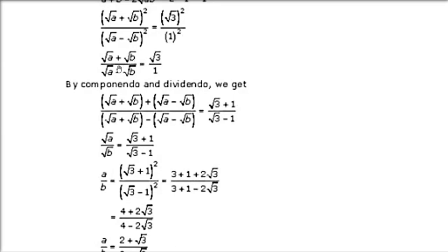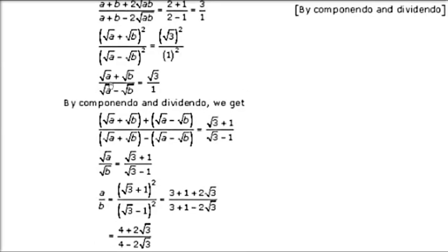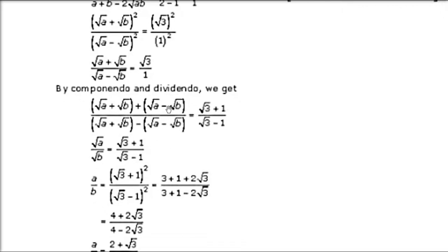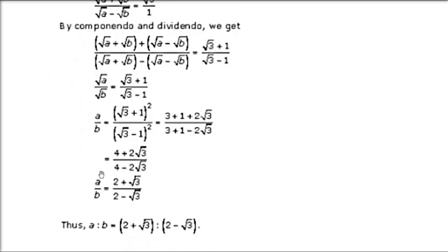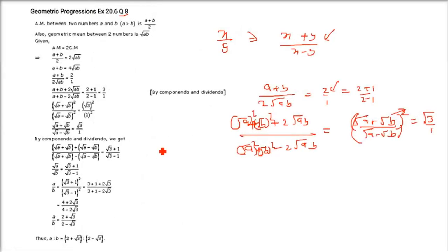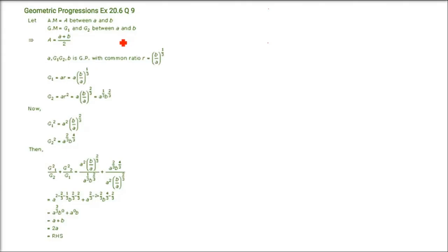Applying componendo and dividendo again: (√a+√b+√a−√b)/(√a+√b−√a+√b) = (√3+1)/(√3−1). This simplifies to 2√a/2√b = (√3+1)/(√3−1), i.e., √a/√b = (√3+1)/(√3−1). Squaring both sides: a/b = (√3+1)²/(√3−1)² = (4+2√3)/(4−2√3) = (2+√3)/(2−√3). This is exactly the same question found in NCERT.